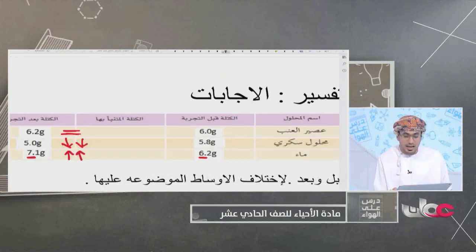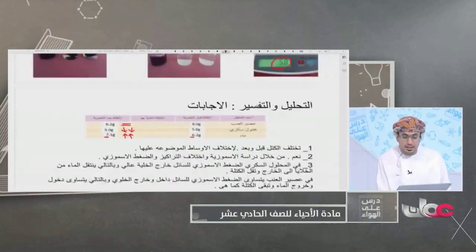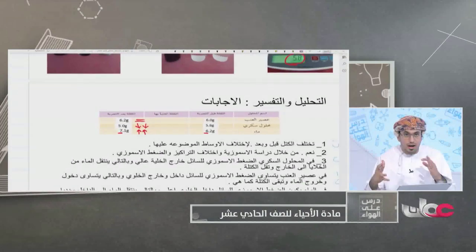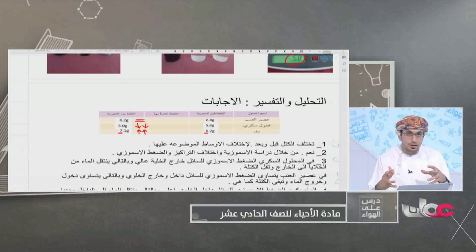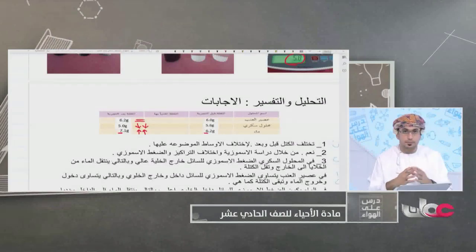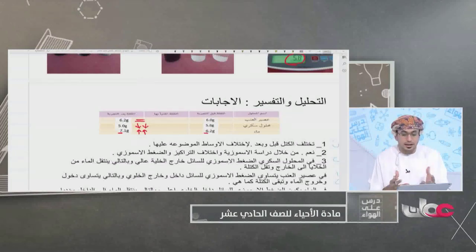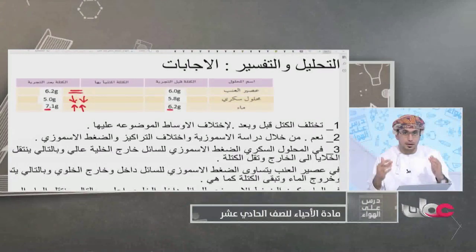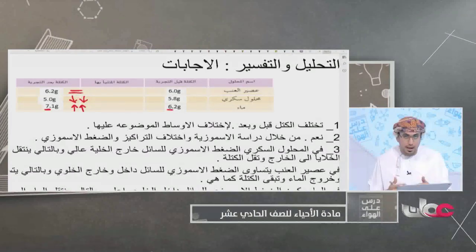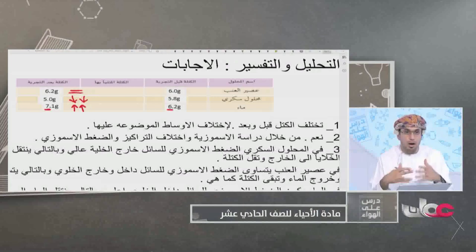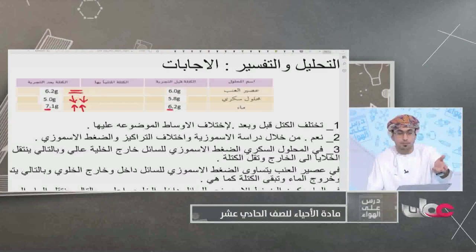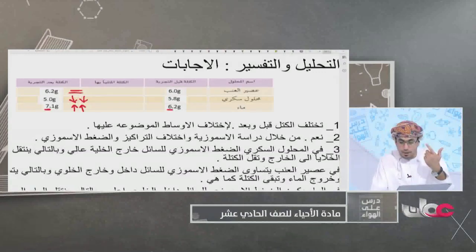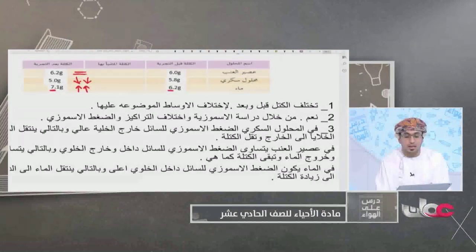نأتي إلى السؤال الثاني: هل اتفقت إجاباتك مع التنبؤات قبل التجربة؟ في المحلول السكري نعم، كنت أتوقع أن العنب يقل حجمه بسبب خروج الماء. وفي الماء أيضاً توقعت أن تزيد الكتلة بسبب دخول الماء. أما في عصير العنب فلم أكن متأكداً من الإجابة السليمة.